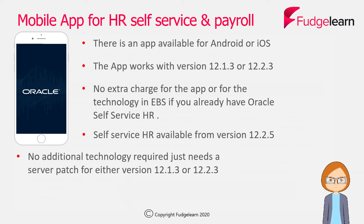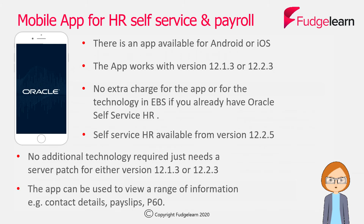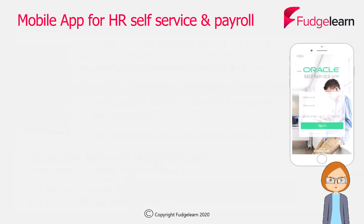The app is available for self-service HR from Oracle eBusiness Suite version 12.2.5, and there's no extra charge for the app or the technology if you're already using a licensed version of self-service HR. There's no additional technology needed — you just need to make sure that you apply the relevant patches and then install the app on your phone. The app can then be used to view a wide range of information, which I'll talk about next.